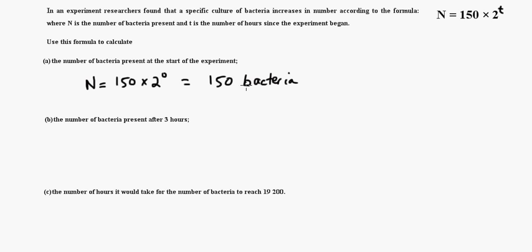So it's going to be 150 times 2 to the zero power. Now, a lot of kids make a mistake. 2 to the zero power is 1. So 150 times 1 is just 150. So there's 150 bacteria at the beginning of the experiment. Now, we can enter this into our calculator. How many are present after three hours? That's pretty easy.